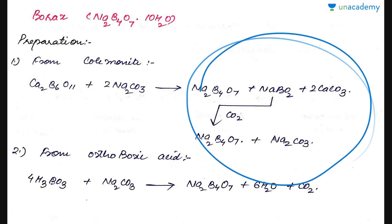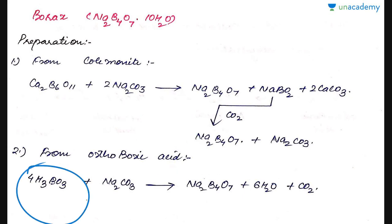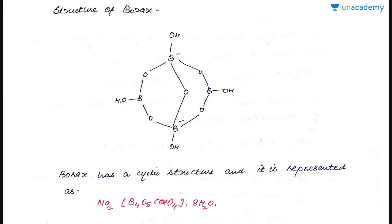Any extra Na2CO3 or any carbonate impurity is removed from the solution and this reaction is carried out multiple times. From orthoboric acid, on treatment with sodium carbonate we get borax plus carbon dioxide gas is released.